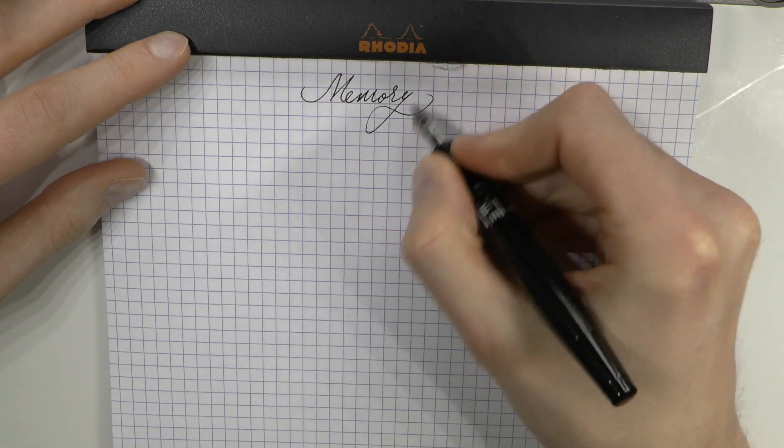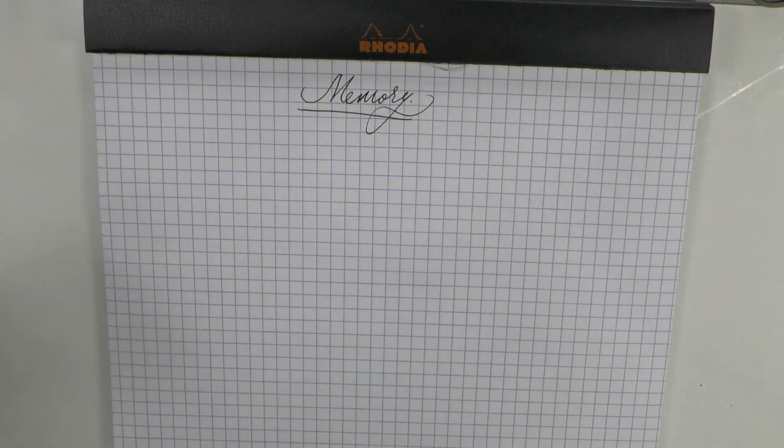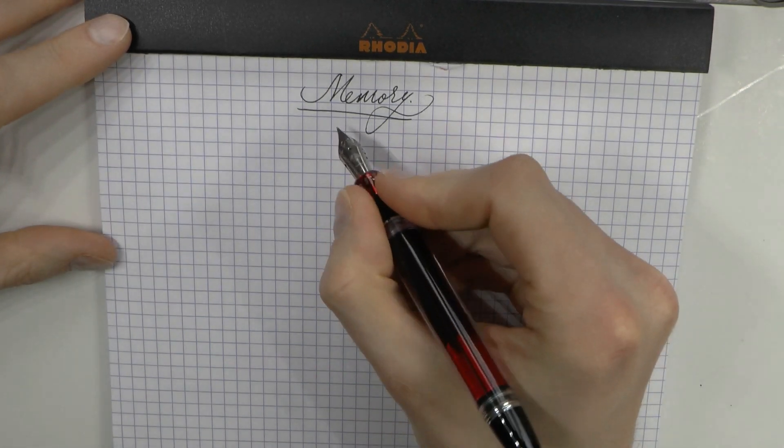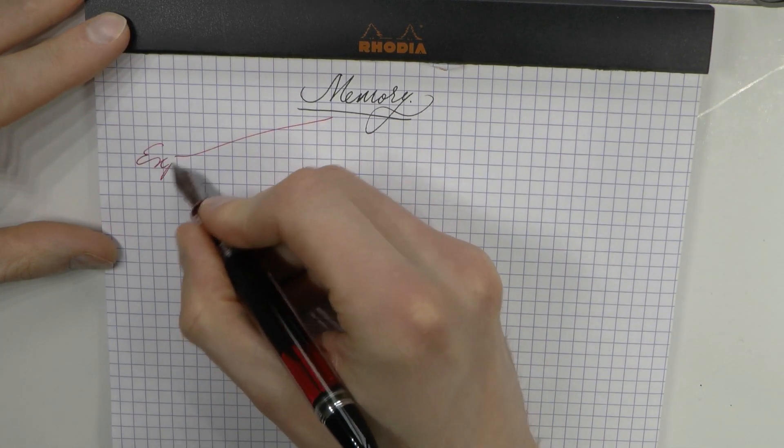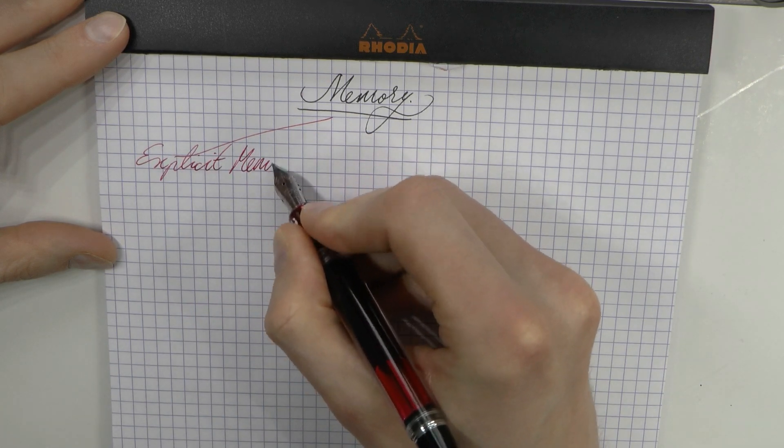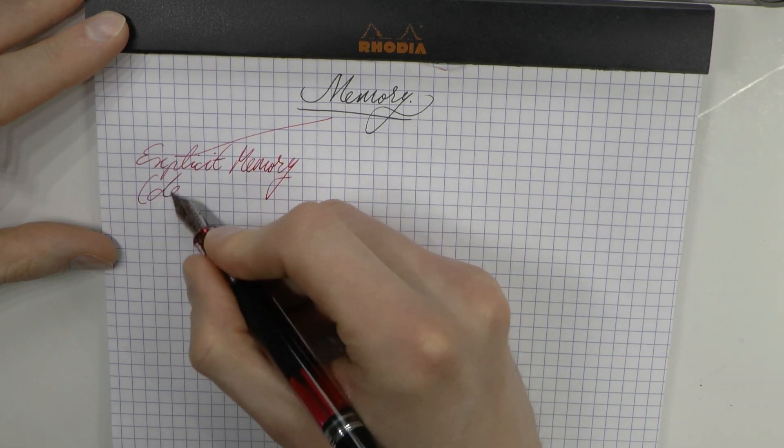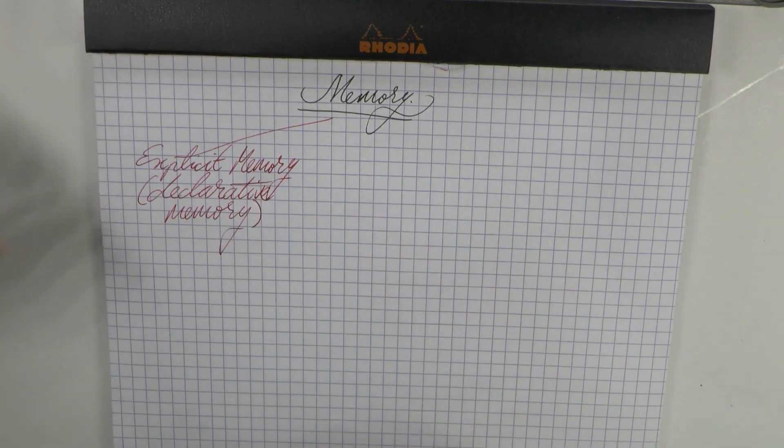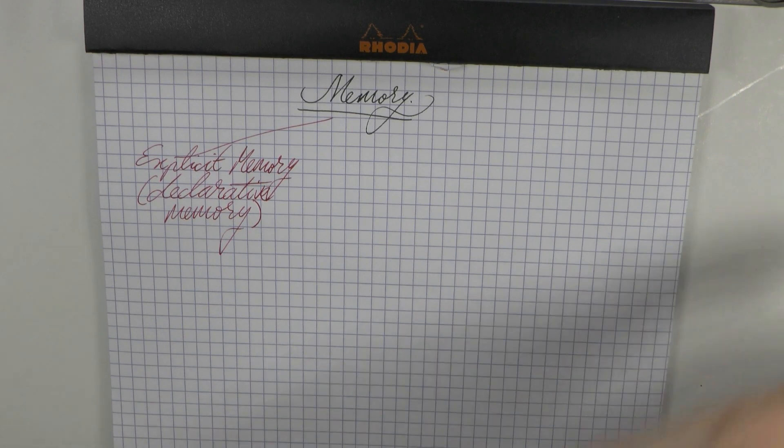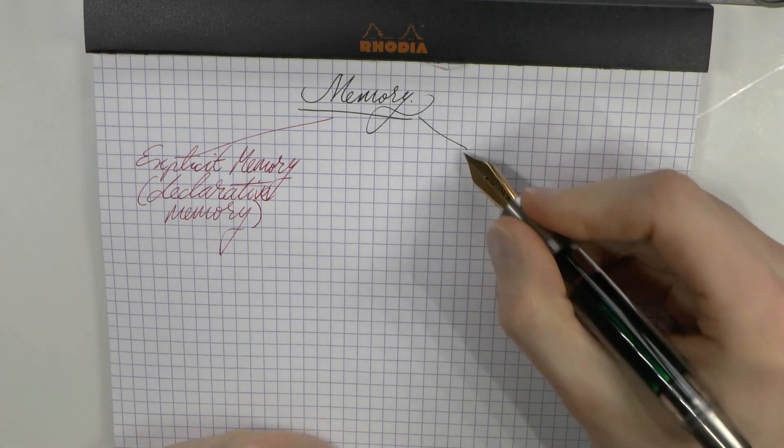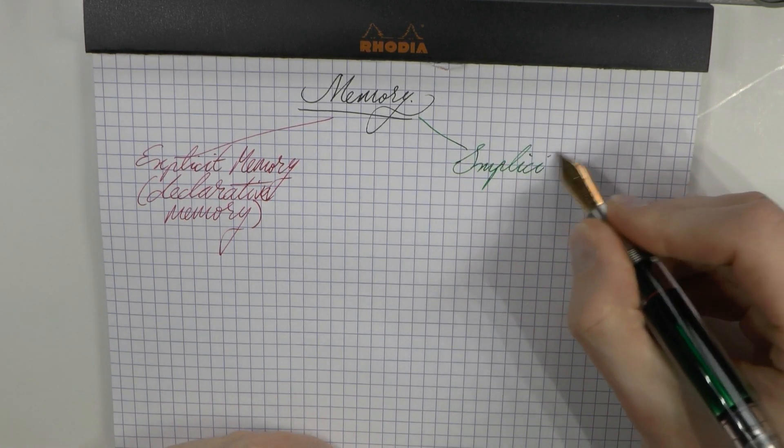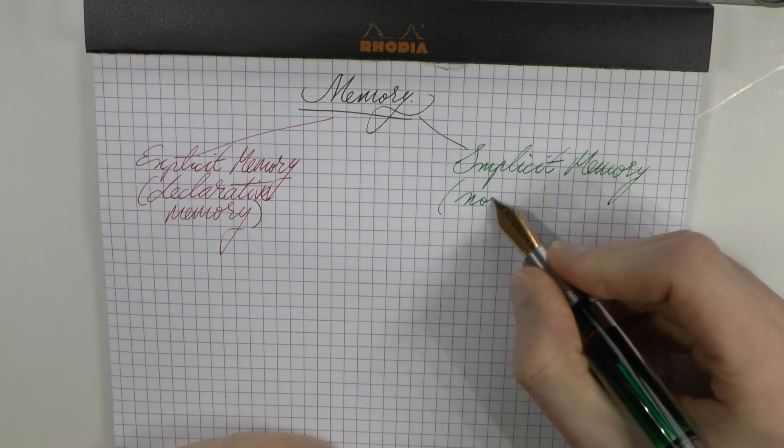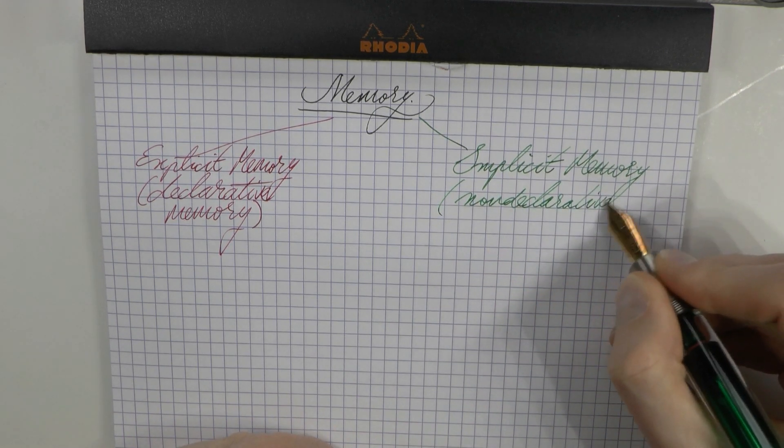Okay, so we start off with memory. Memory is complicated enough as it is, but you can split that up into two kinds of memory. On the one hand we have explicit memory, and what makes things confusing is that this is also known as declarative memory. Then you also have implicit memory, which is also known as non-declarative memory.